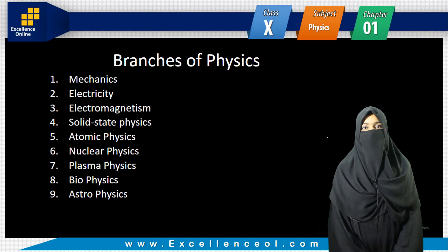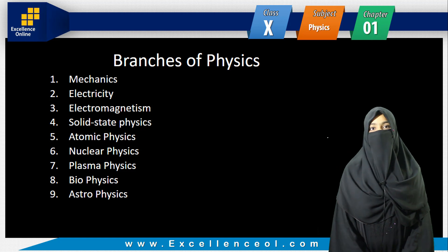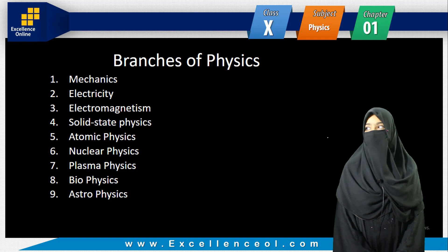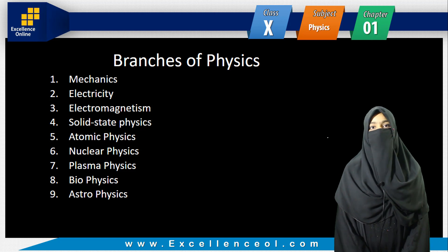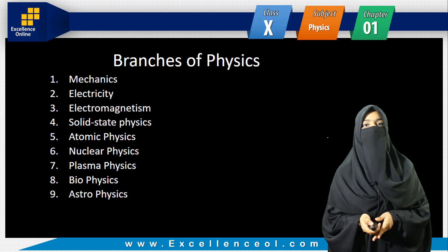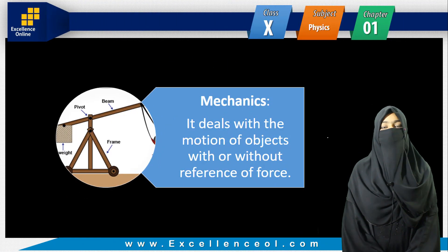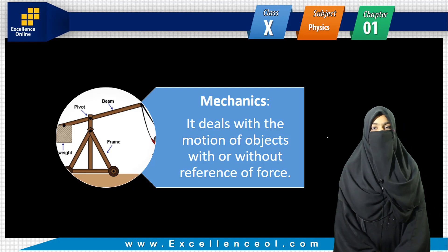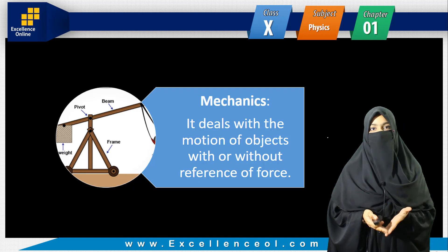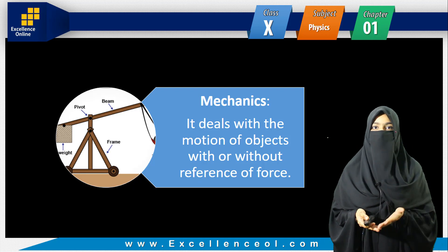There are mainly nine branches of physics: mechanics, electricity, electromagnetism, solid-state physics, atomic physics, nuclear physics, plasma physics, biophysics, and astrophysics. First of all, let's define mechanics. Mechanics deals with the motion of objects with or without reference to force — whether it is with force or without force.